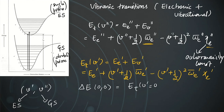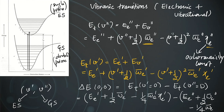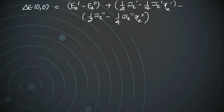The transition energy ΔE for the (0,0) transition is the total energy with v′=0 minus the total energy with v″=0. Substituting the values: this gives E_e′ plus (1/2)ω̄_e′ minus (1/4)ω̄_e′ψ_e′, minus the corresponding ground state terms.